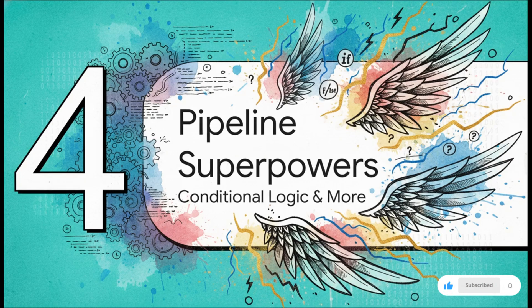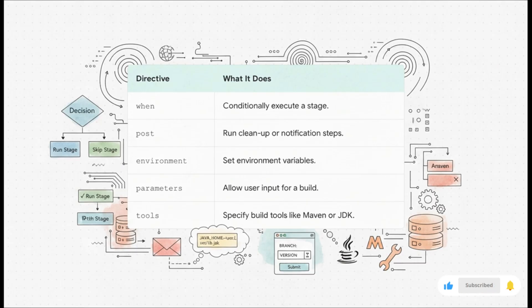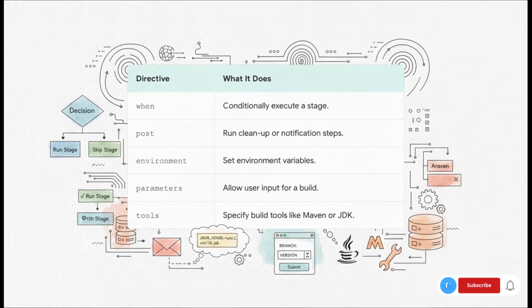A simple linear pipeline is a fantastic start, but the real world is messy. We need our pipelines to be smarter and more flexible. This is where we level up and start adding real superpowers. Declarative syntax gives us an awesome toolkit of what are called directives. You've got 'when' — to decide if a stage should run at all; 'post' — for cleanup tasks like sending a Slack notification or cleaning up workspaces; 'environment' — to set up variables; 'parameters' — a huge one that lets you ask for user input when you kick off a build; and 'tools' — to specify which version of, say, Java or Maven you need.